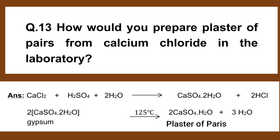Number 13. How would you prepare plaster of Paris from calcium chloride in the laboratory? CaCl2 plus Ca(OH)2 gives CaSO4·2H2O plus 2NaCl. Heating at 150°C: 2CaSO4·2H2O gives 2CaSO4·½H2O (plaster of Paris) plus 3H2O.